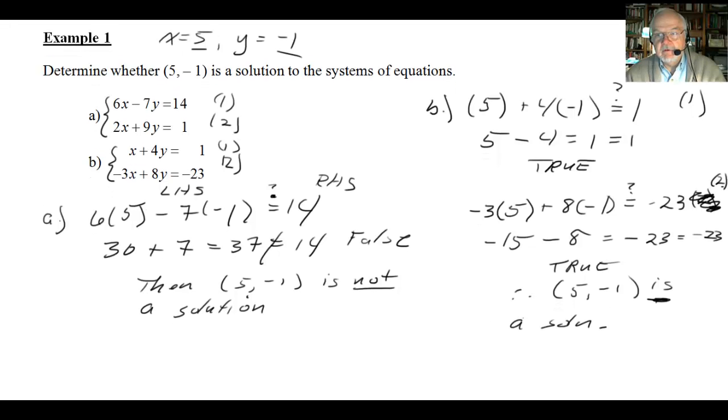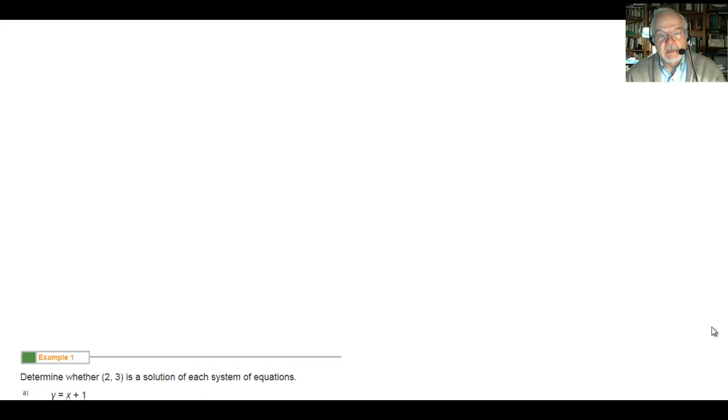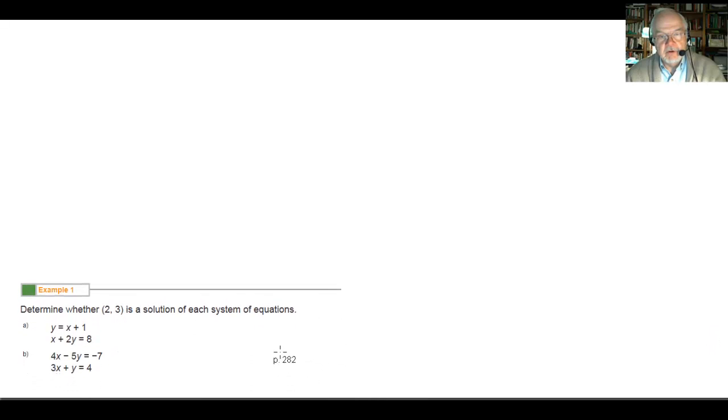Now, if you understood that, as we've done before, you should go to the book, to page 282, and try these two problems. See if the ordered pair (2, 3) is a solution to these two system equations. Good luck!